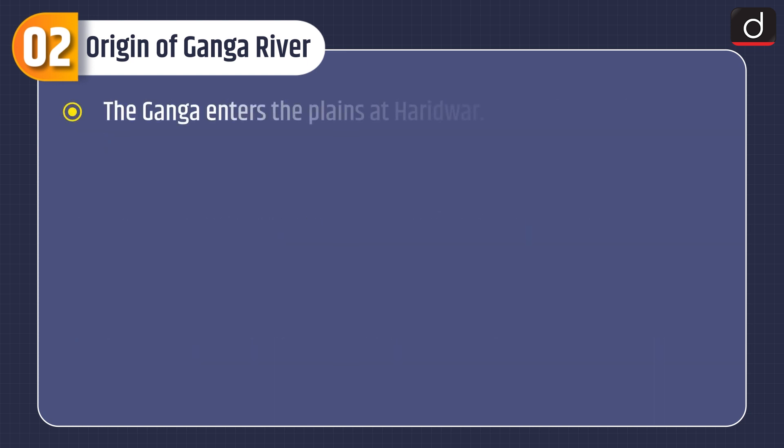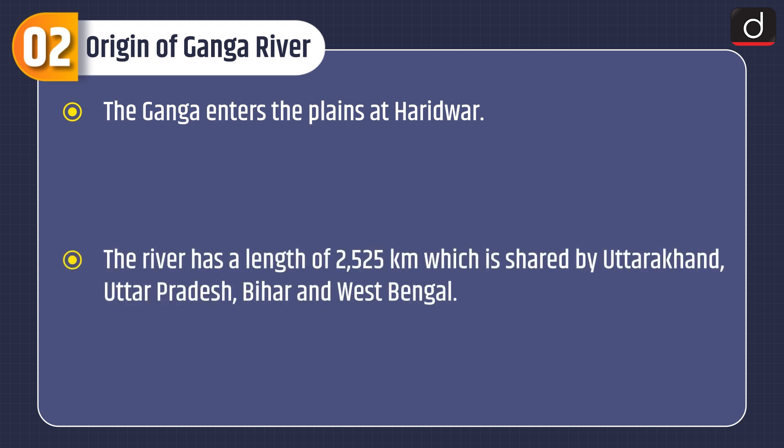The Ganga enters the plains at Haridwar. The river has a total length of 2,525 km, which is shared by Uttarakhand, Uttar Pradesh, Bihar, and West Bengal.